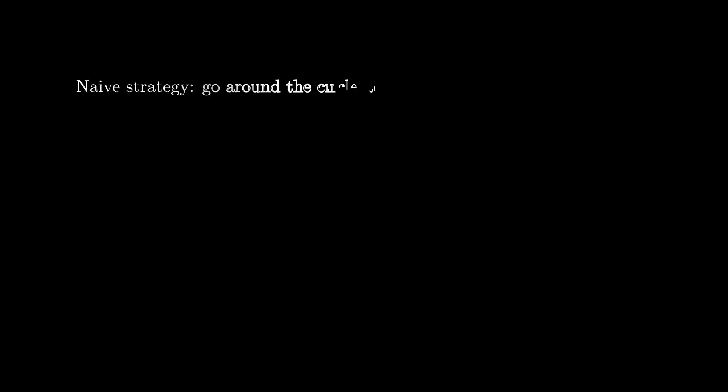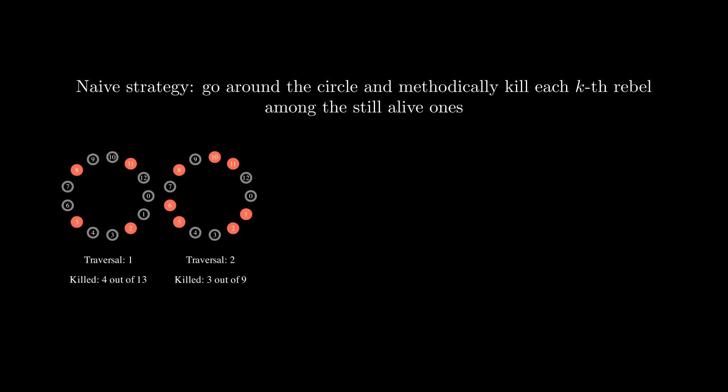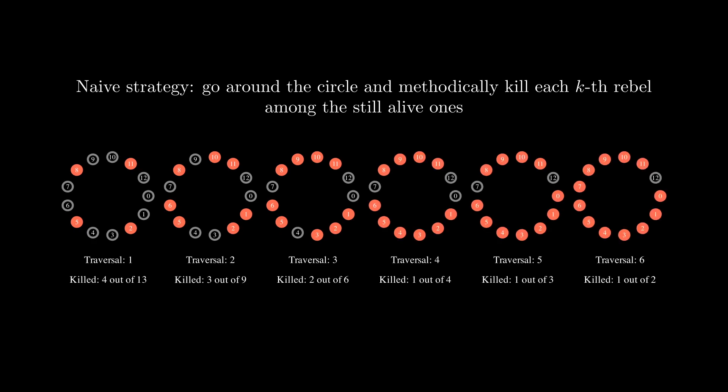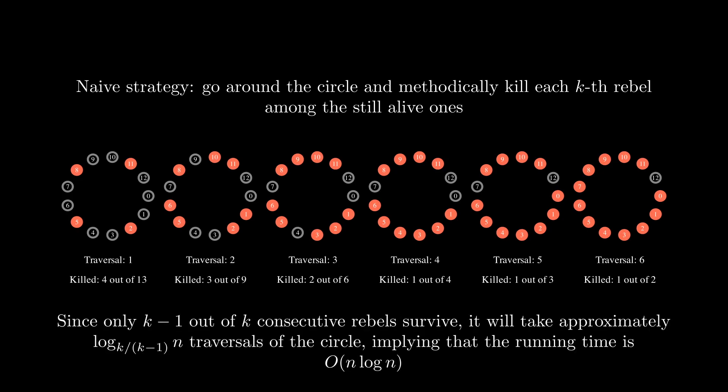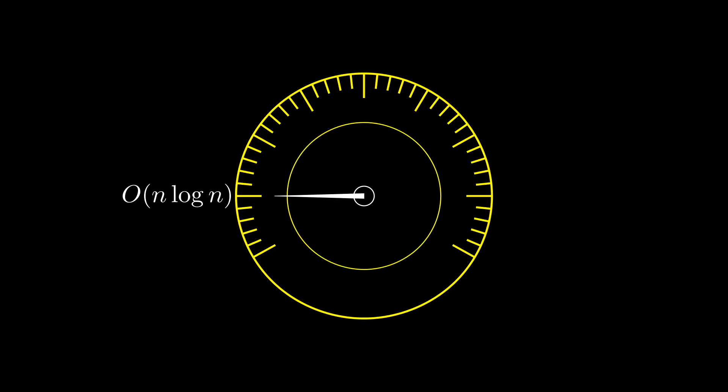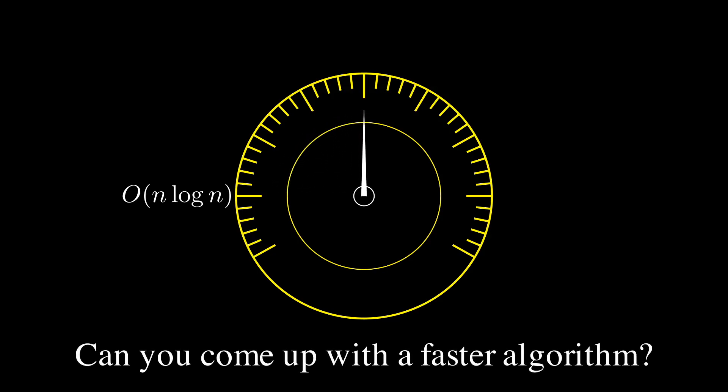A simple yet slow algorithm for solving the Josephus problem is to go around the circle and methodically kill each kth rebel among the still alive ones. In the case of n equal to 13 and k equal to 3, it will take 6 traversals of the circle. Too slow. All the birthday cake will be gone. All the emperors will have left. We've got stuff to do. In general, the number of alive rebels is reduced by a factor of approximately k divided by k-1 after each traversal of the circle. Therefore, it will take approximately log n traversals of the entire circle to find the answer. We've designed an n log n time algorithm. Can you come up with a faster algorithm? Remember, the cave awaits.